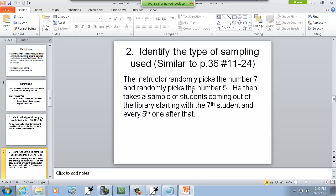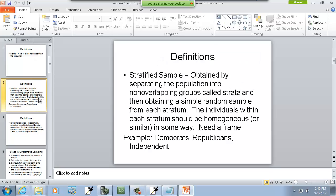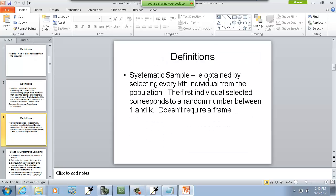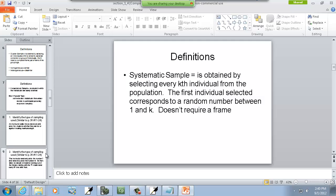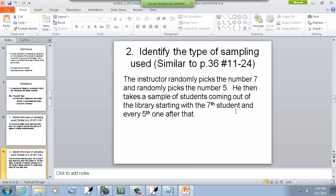Okay. The instructor randomly picks the number seven and randomly picks the number five. He then takes a sample of students coming out of the library, starting with the seventh student, and every fifth one after that. Definitely not stratified. We're not breaking into groups. Systematic sample. It's obtained by selecting every kth individual from the population. And then, the first one selected is a random number. So that is actually the systematic. So this one's systematic.